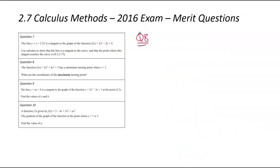We are now looking at question number 8. We've been given a function and told it has a minimum turning point when x equals 1. We're asked what the coordinates of the maximum are. This makes sense because we're dealing with a cubic, which means there should be a minimum and a maximum — two turning points. We'll write down the function: 2x cubed plus kx squared plus 5. That k is what creates the difficulty here.